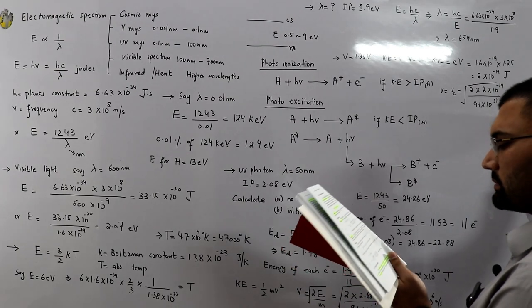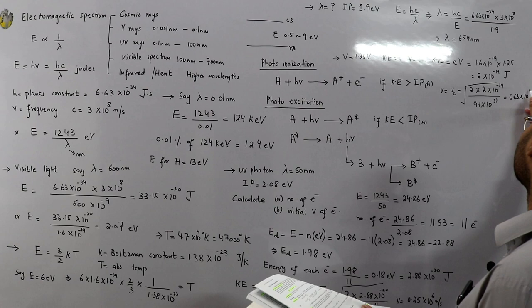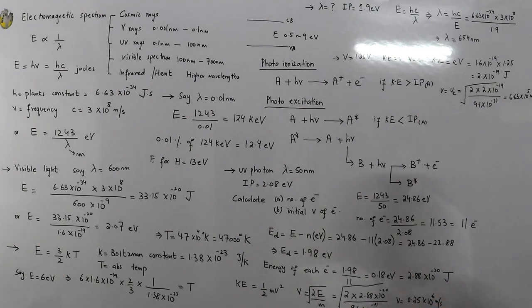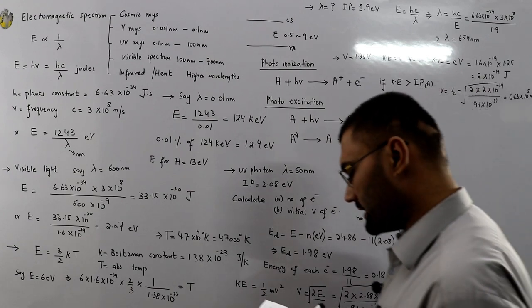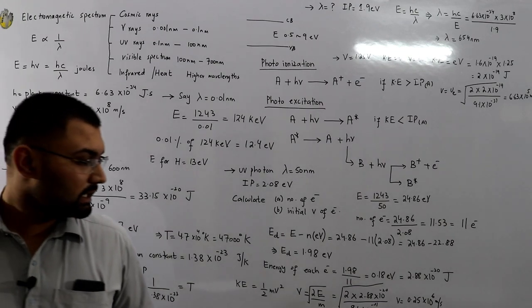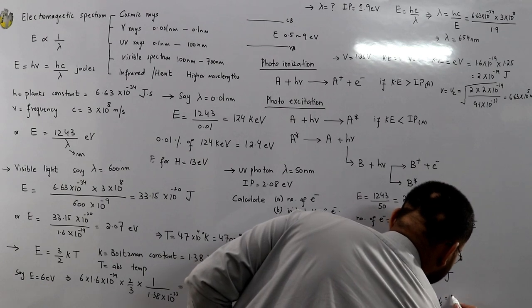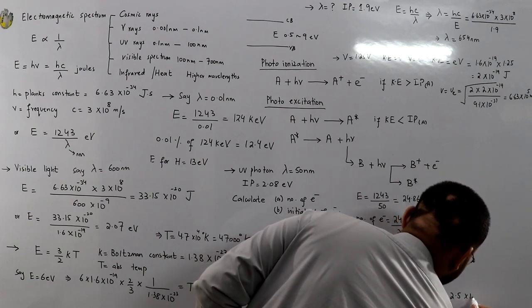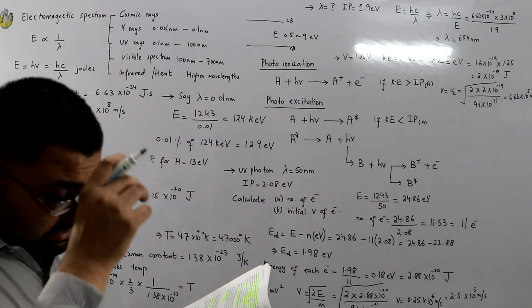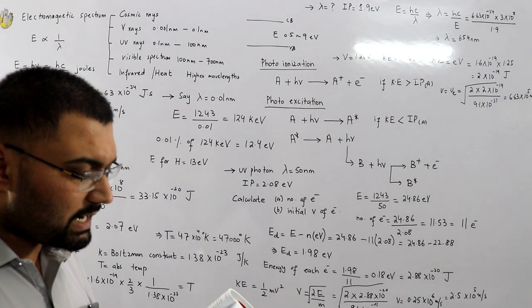The velocity comes out to 6.63 × 10⁵ meters per second, or you can also get 2.5 × 10⁵ meters per second. The standard scientific notation requires one non-zero digit to the left, so we write it as 2.5 × 10⁵ meters per second.